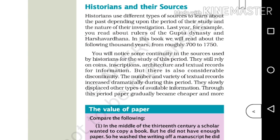Last year, for example, you read about the rulers of the Gupta dynasty and the Harshavardhana. In this book, we will read about the following thousand years, from roughly 700 to 1750.